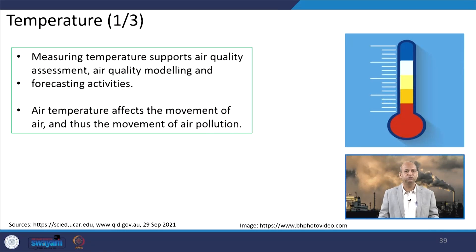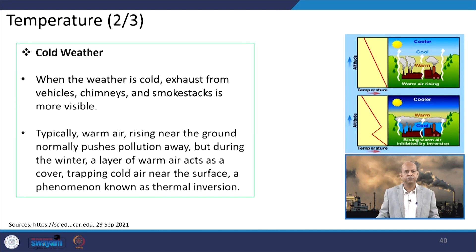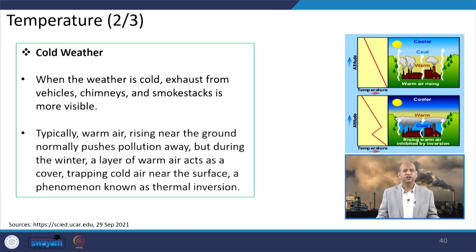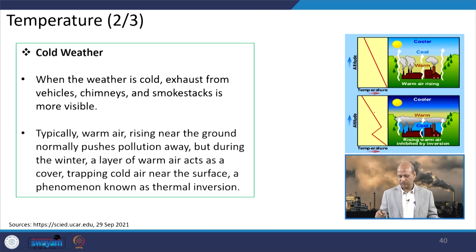Temperature is also very important because it influences dispersion through differential heating patterns. Air quality assessment, modeling, and forecasting are done with the help of moisture and temperature as modeling input parameters. In cold weather, when the atmosphere is cold and vehicle exhaust emissions are more, dispersion may be very less. Warm air rising near the ground takes pollutants away, so dispersion increases with temperature. In the case of inversion, there can be a lot of build-up of pollutants and dispersion may be very limited.